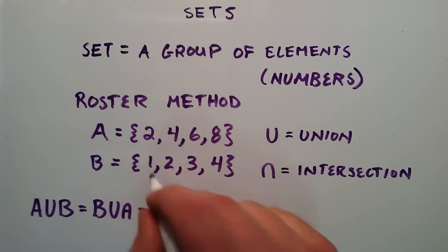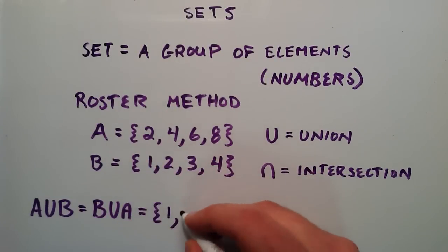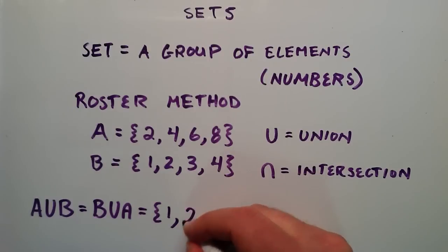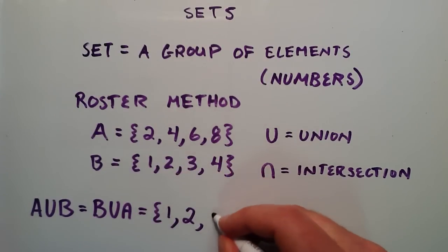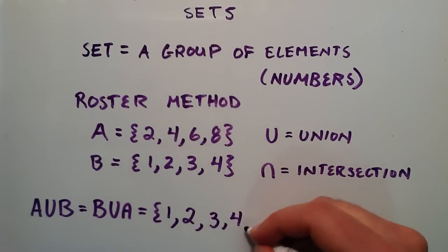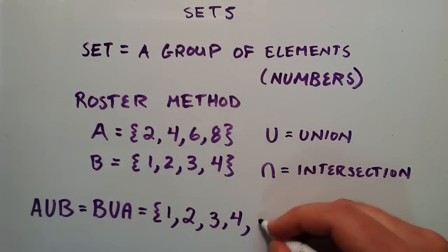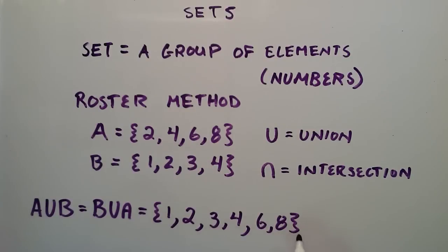We just simply start writing them down. We have a 1, we have a 2 in both, and there's no need to write that element twice. We simply write each element once, even though it's included in both. Now we have a 3, and we have a 4 in both, but we only need to write the 4 once. And we have a 6 and an 8. So this set is A union B, or B union A. It's all of the elements that are in either A or B.